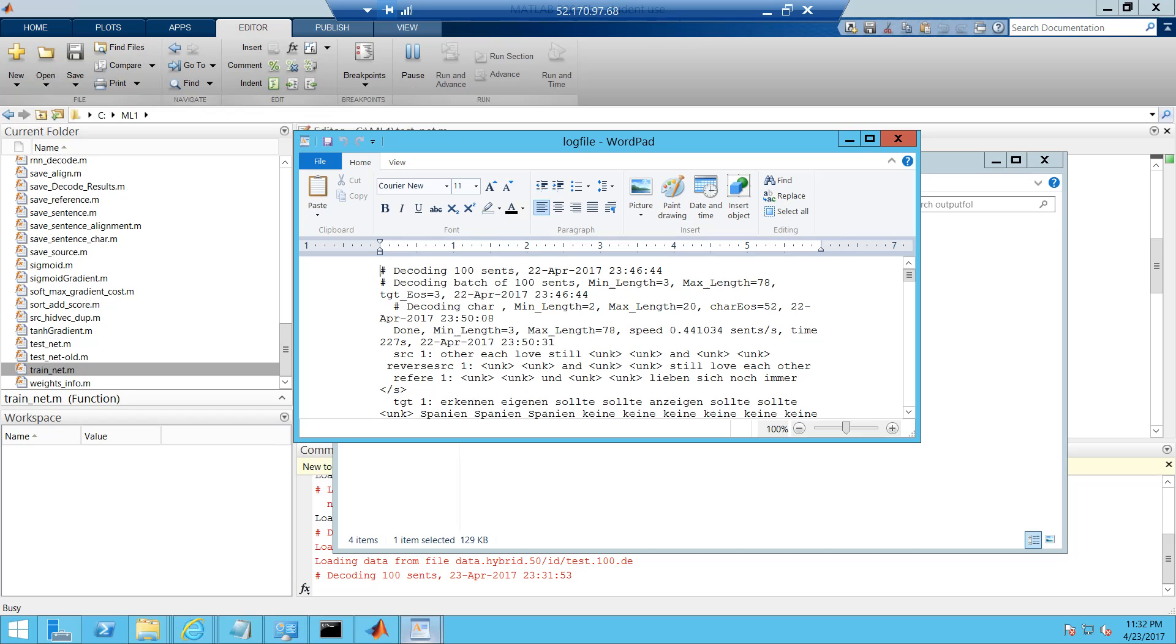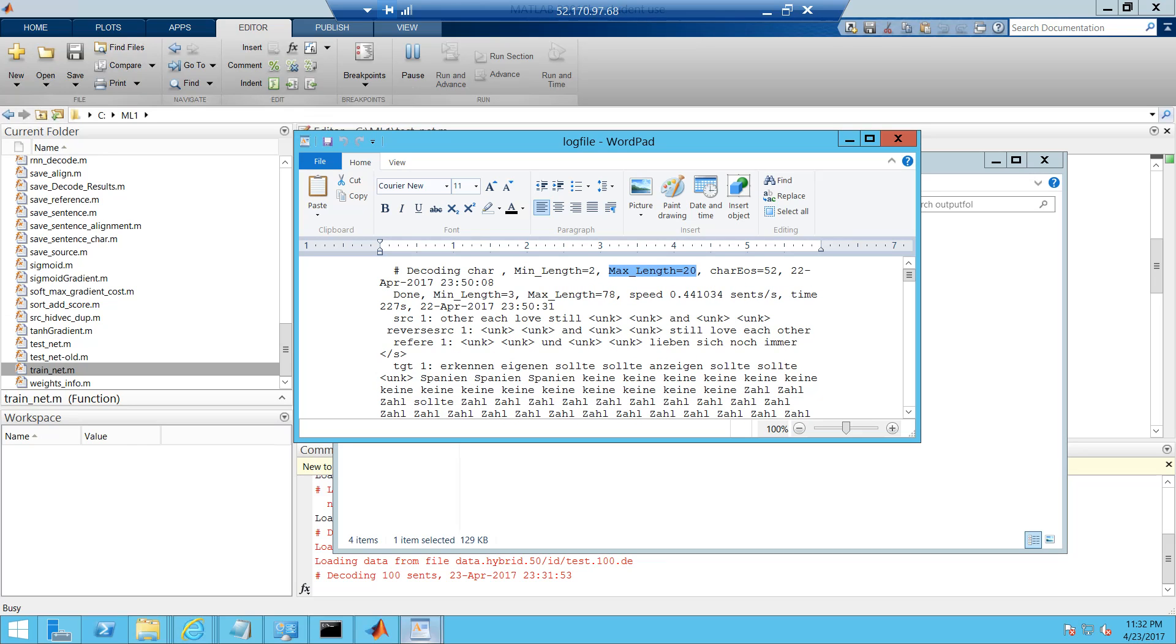This is telling us how many sentences we decoded. I had around 100 sentences. It is telling me the time and it is giving me the ID of the end of sentence. The ID of the end of sentence is free. And the minimum length that we had chosen, maximum length. If you see, it's telling us what the source is. We are passing the source in reverse sentence so it's printing it in reverse. And the actual sentence is this one.